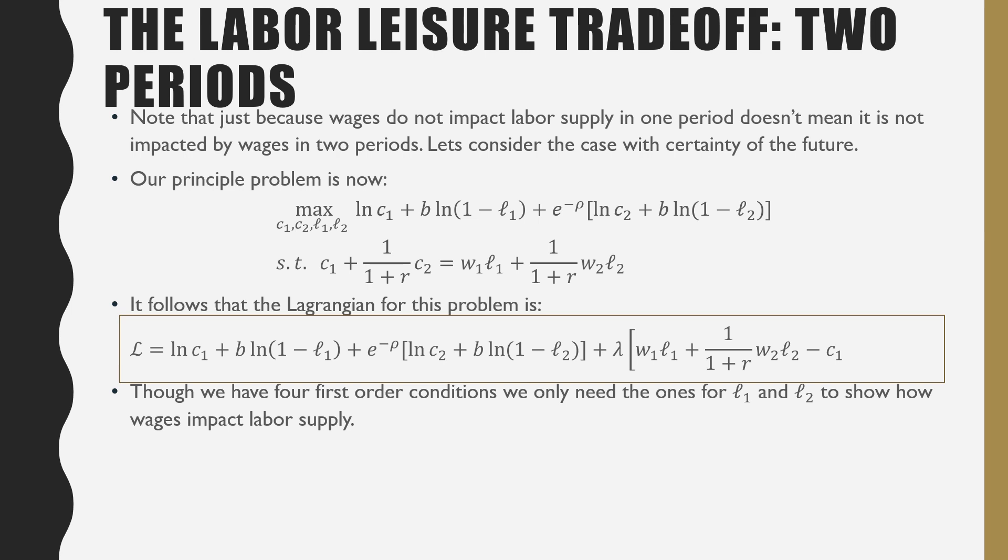subjected to our intertemporal budget constraint, where we now have these discounting terms, 1 plus R, where R is our interest rate. And we go and plug that into our Lagrangian.